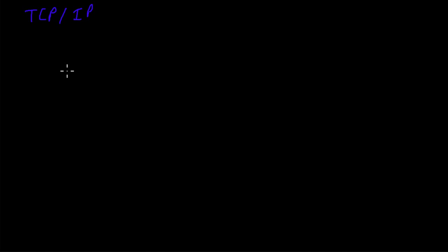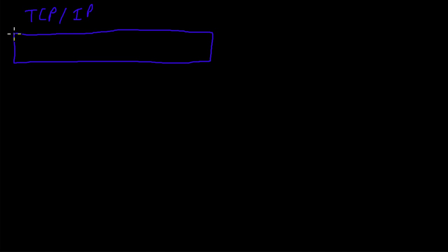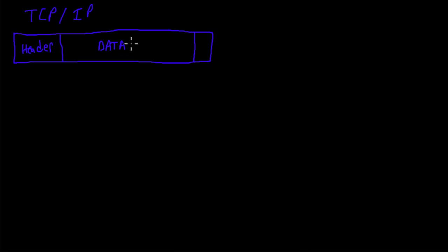A TCP/IP packet has lots of different sections, but the main sections we can divide it up into are a header — which contains a lot of the control information — and a data portion which fills up most of the packet, also known as the payload.